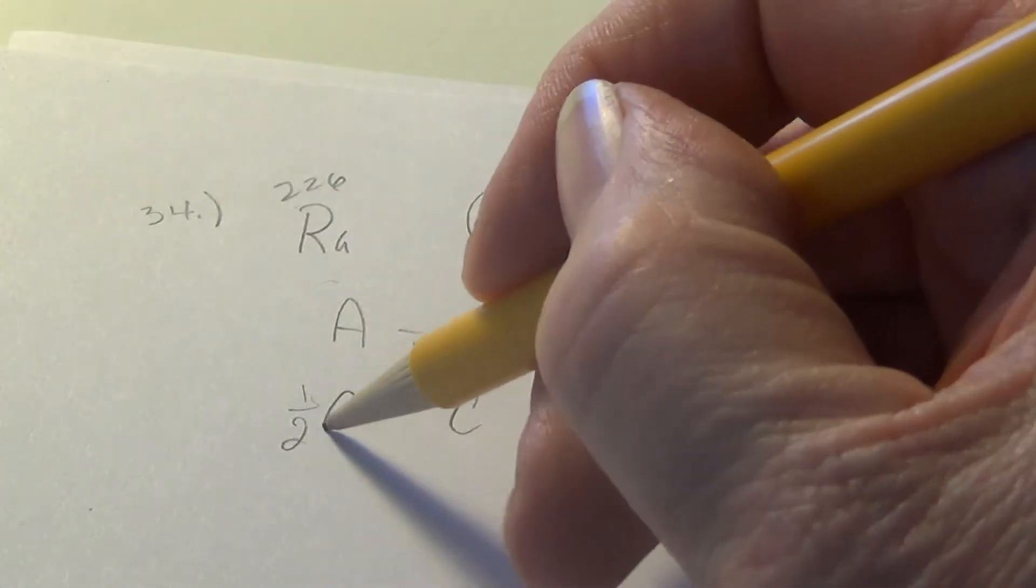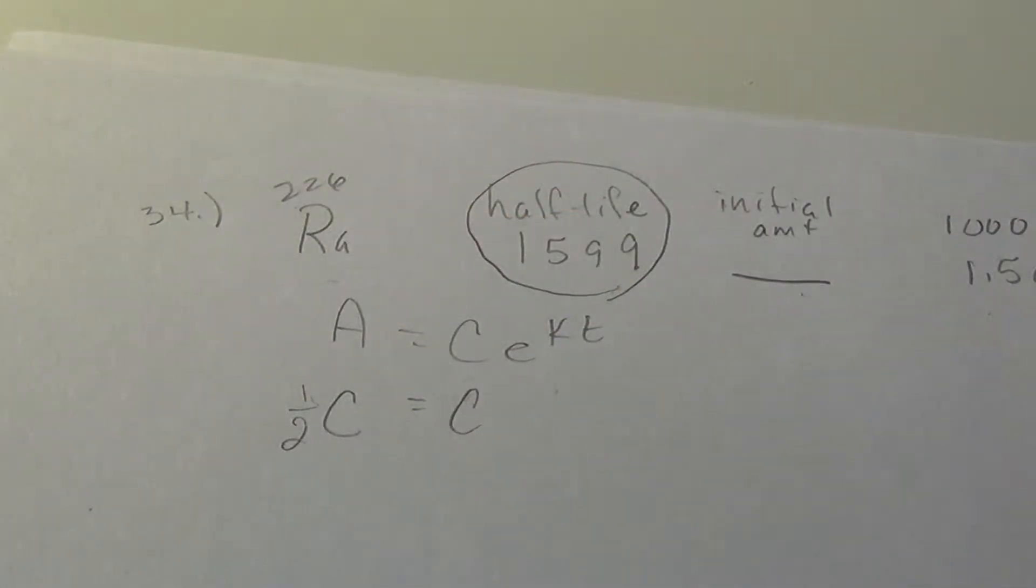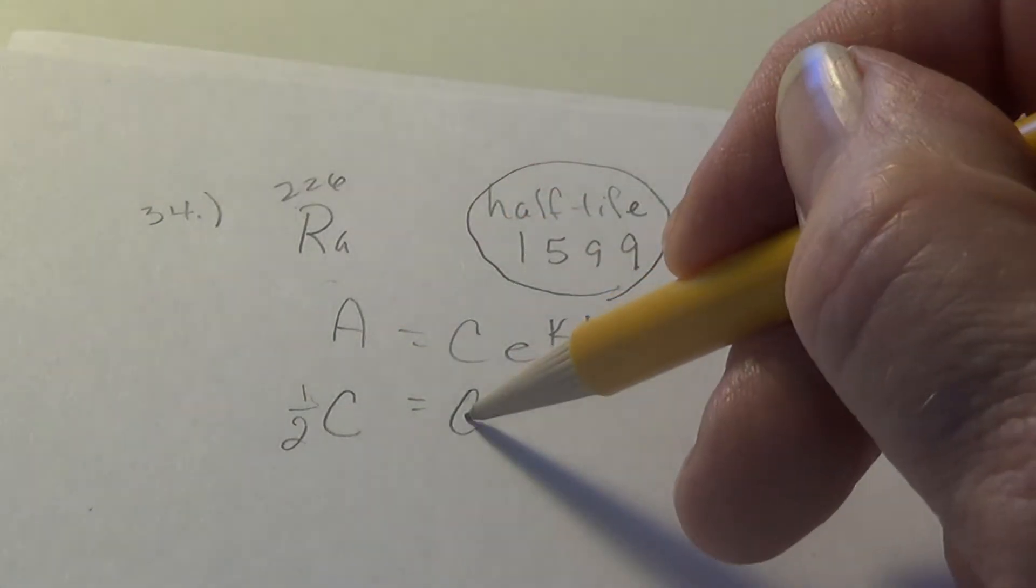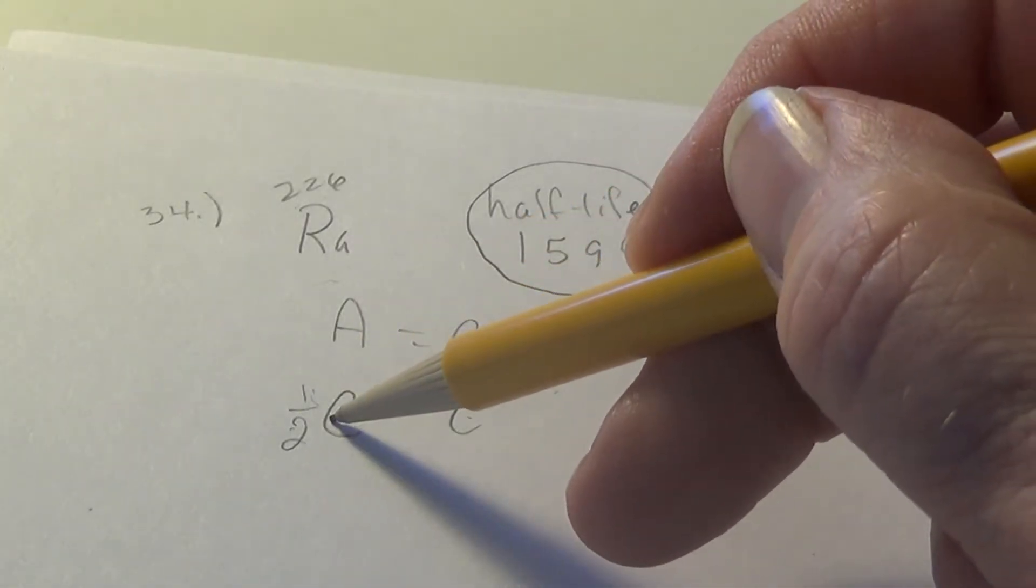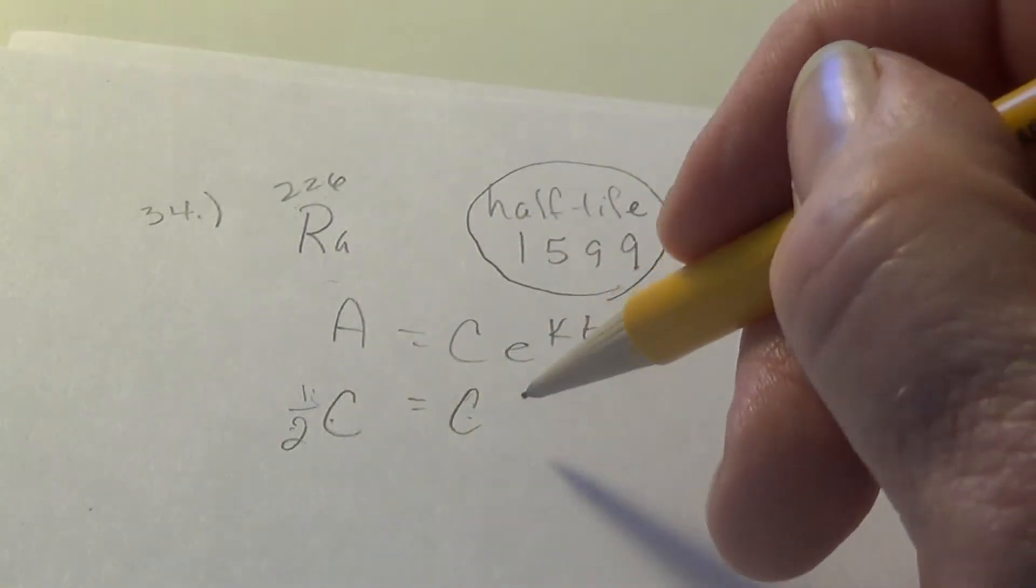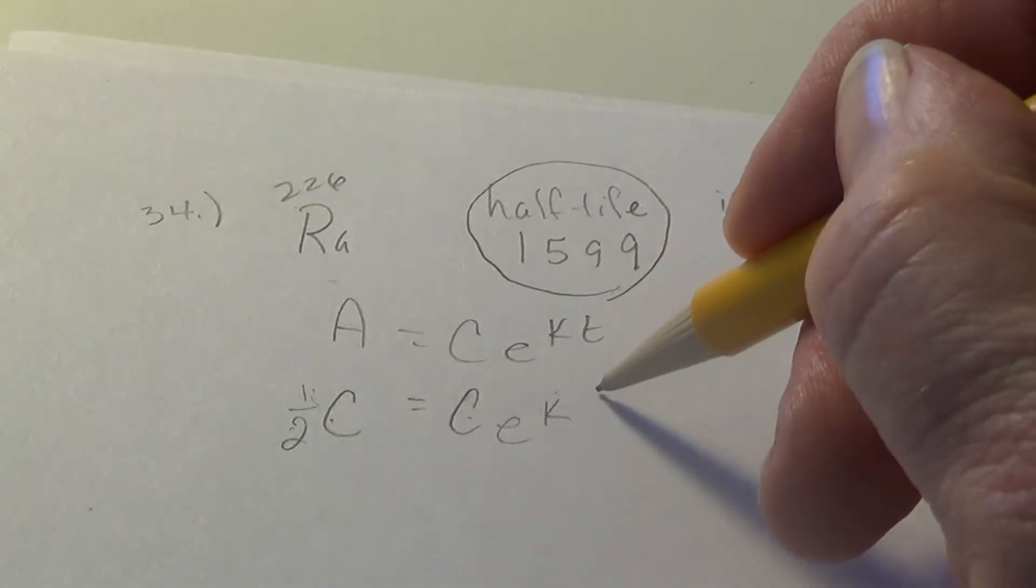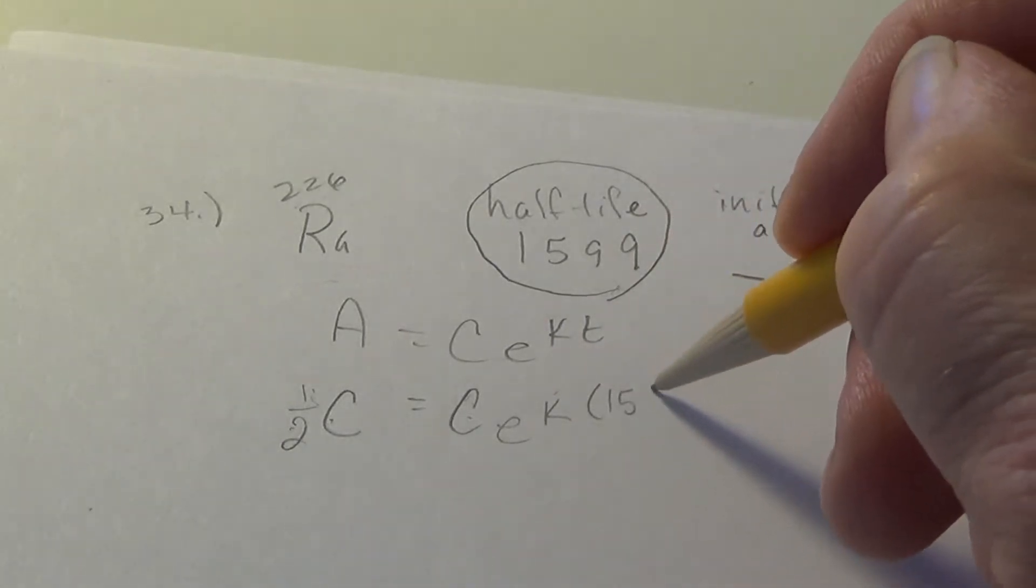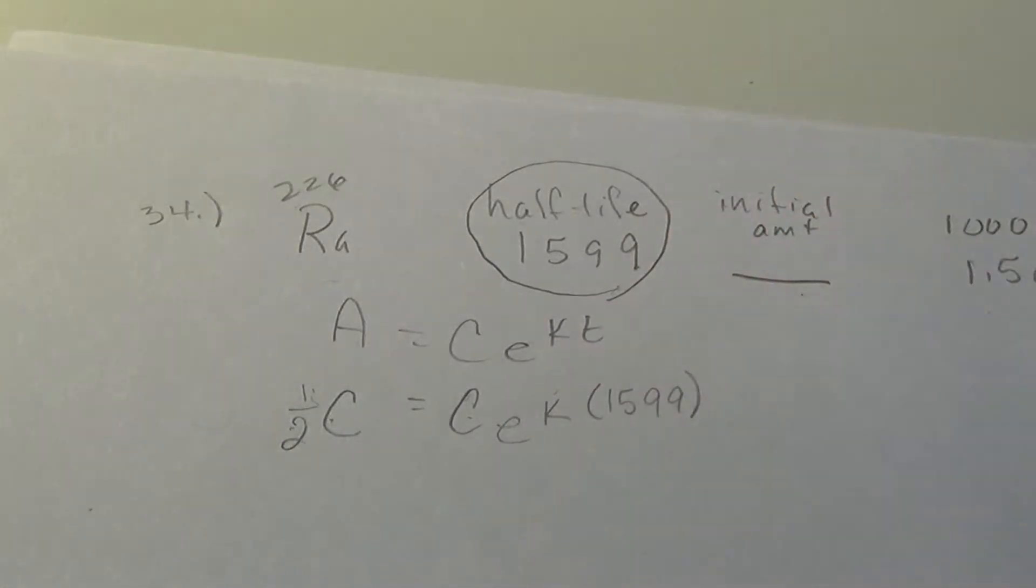So if you will, I'll call this C for the initial amount, and one-half C when half of it has decayed, and that takes place at year 1599.